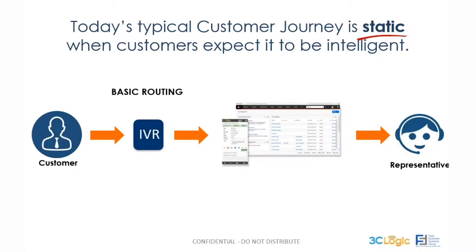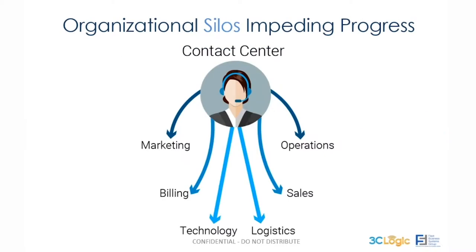Depending on that very broad and general selection, most likely the individual gets pushed to a very generic team. There's really no intelligent routing of a customer's requirements to the appropriate skilled agent, no automation of information displayed to the receiving agent fielding that inquiry. And yet as consumers, we automatically assume organizations have all the information readily available. The expectation gap between what consumers expect and how most organizations operate is an issue that 3C Logic, as a complement to Sugar CRM, will try to help resolve.